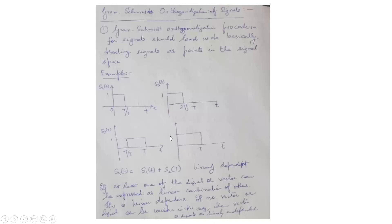First of all we need to identify whether these signals are linearly independent or linearly dependent. If you look at s4, this signal can be constructed from s1(t) and s2(t), which means these are linearly dependent signals. If at least one signal or vector can be expressed as a linear combination of others, it is linearly dependent. If no vector or signal can be written this way, then the signals are linearly independent.